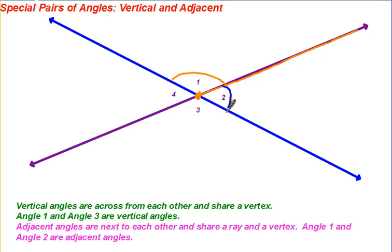Angle 2 and angle 3 are adjacent angles. Angle 3 and angle 4 are adjacent angles. They share this ray right here in this vertex. Angle 4 and angle 1 are also adjacent angles.